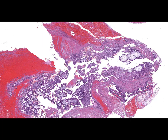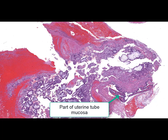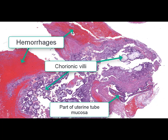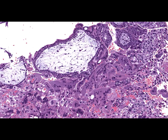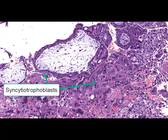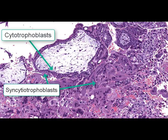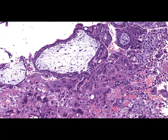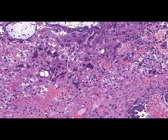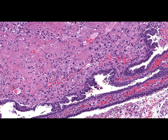On this slide we can see a discontinued pregnancy. At low magnification, we can see small areas of mucous membrane of the uterine tube, numerous chorionic villi, and a large hemorrhagic area. At high magnification, the chorionic villi are presented by trophoblasts — syncytiotrophoblasts and cytotrophoblasts — as well as the stroma of the chorionic villi. Changes related to the decidualization process are found in mucous and submucous layers of the fallopian tube, manifested by the presence of large cells with large nuclei.